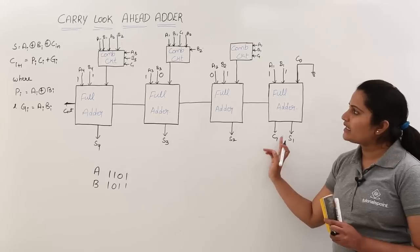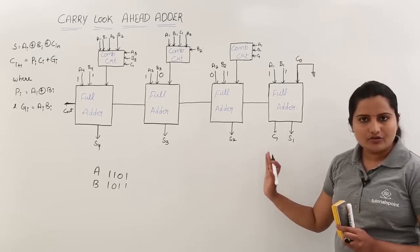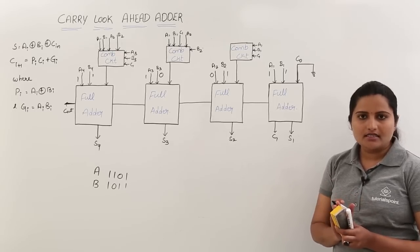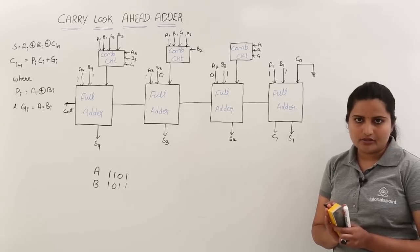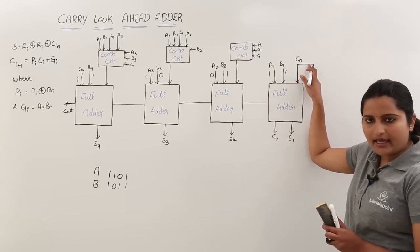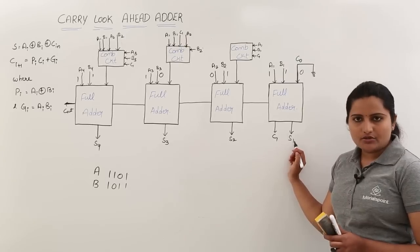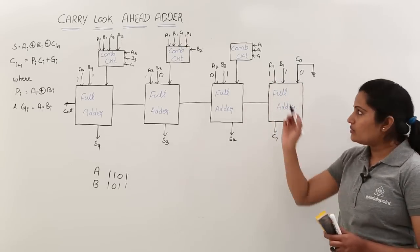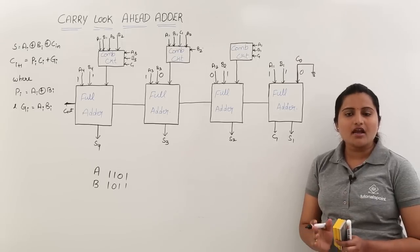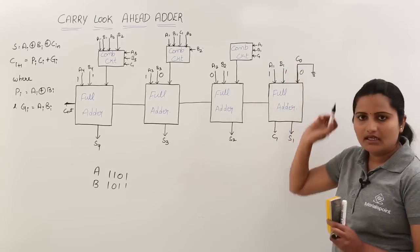Whatever carry we are getting from the first full adder is internally connected to all the combinational circuits in the carry look ahead adder. Now we need to define the value of C1. As we know, full adder sum is equal to XOR of inputs, and carry is equal to the multiplication and addition of those inputs. Here A1=1, B1=1, C-naught=0 (connected to ground). The sum is equal to XOR of all three inputs. Observing 2 ones — since XOR is an odd-1 detector and this is an even number of ones — the output is equal to 0.